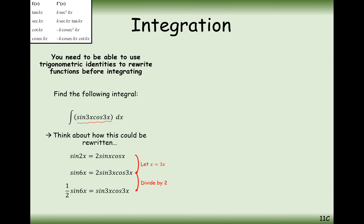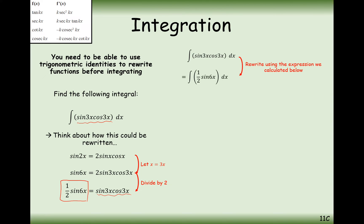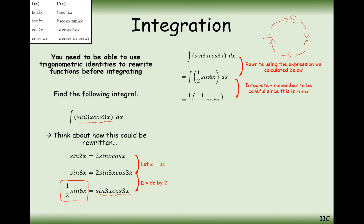So instead of integrating sine 3x cos 3x, we're going to integrate something identical to it: a half sine 6x. Moving around the trigonometric circle — minus cos back to sine — sine moves backwards to minus cos. Dividing by the 6 as well, we get minus one twelfth cos 6x plus c.